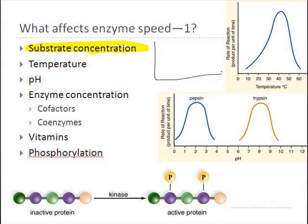There's an upper limit to this, though. If you keep adding substrate, the rate of reaction will continue to increase, but at some point it will level off. The reason is that at that point you have literally saturated all of the enzymes with as much substrate as possible — there's no way to make more reactions occur because all the enzyme molecules are currently occupied with substrate.